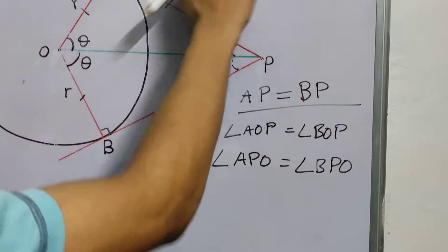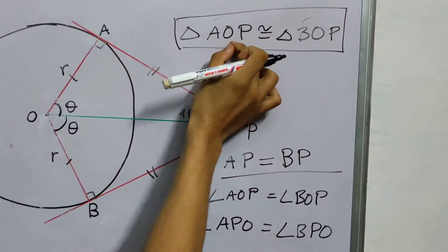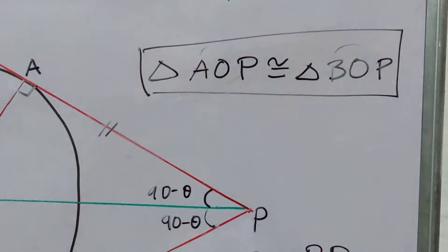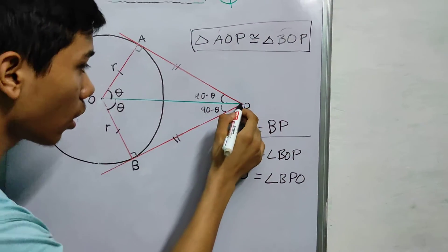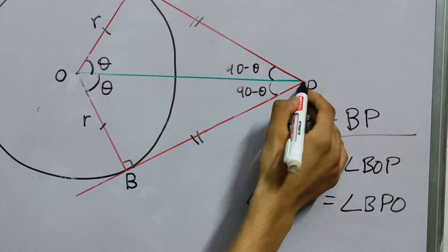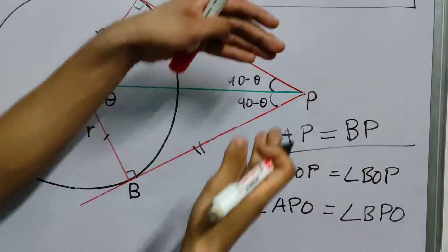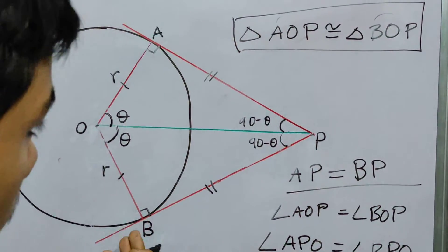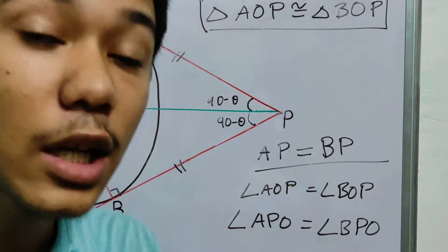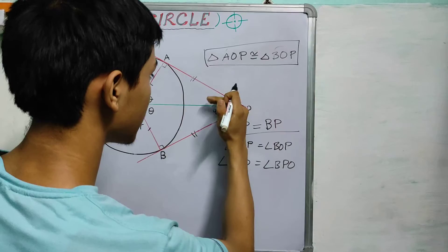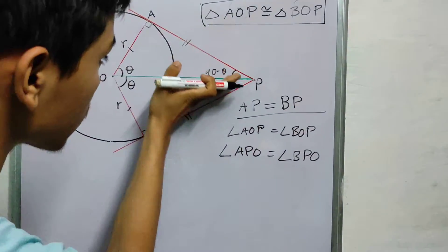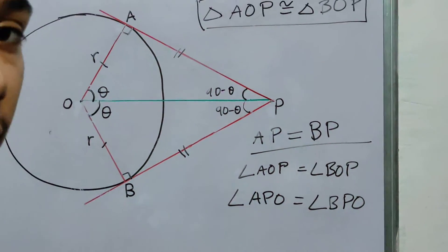You can also see this from the way we write these letters. Now, what does this mean? If you draw a line connecting the center here and a point, and from this point we draw two tangents, the tangents will be equally inclined. That's what we say. It makes an angle theta. It will also make the same angle. So these are equally inclined.